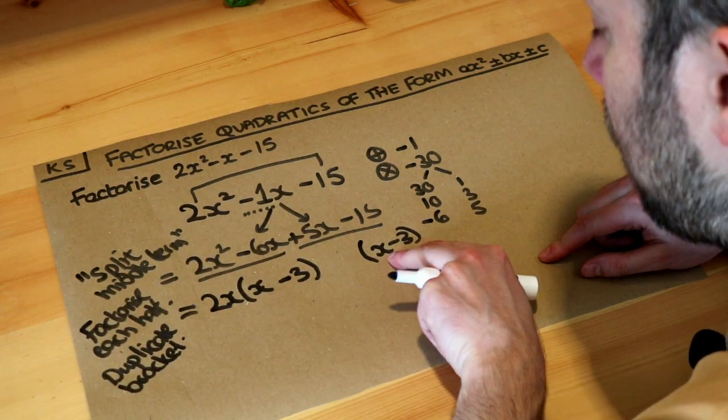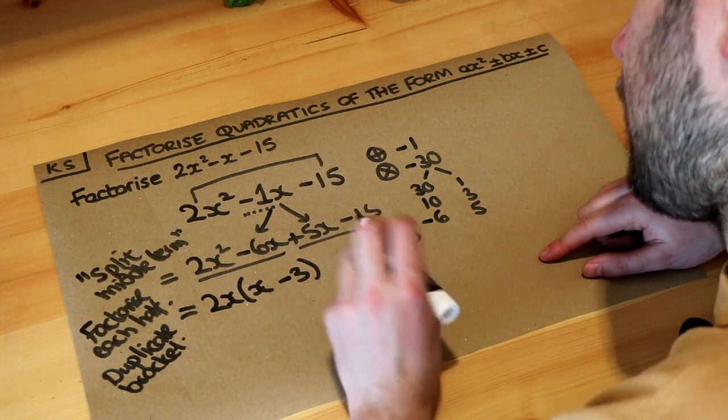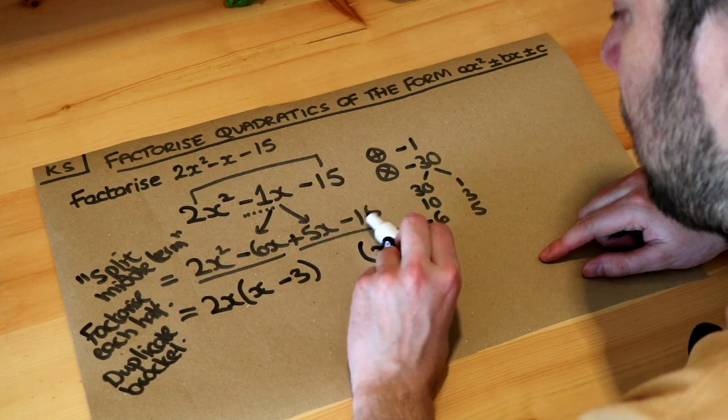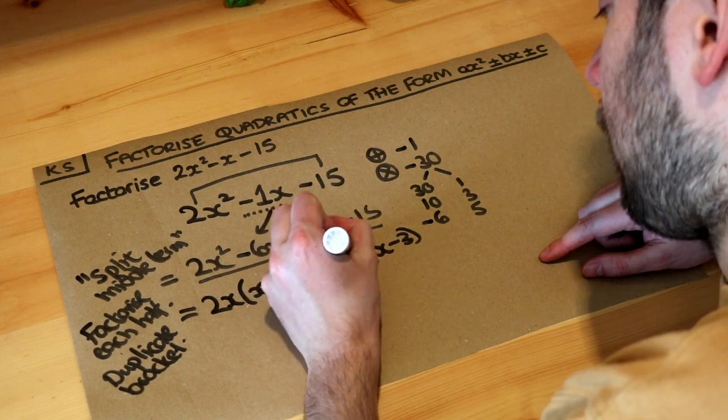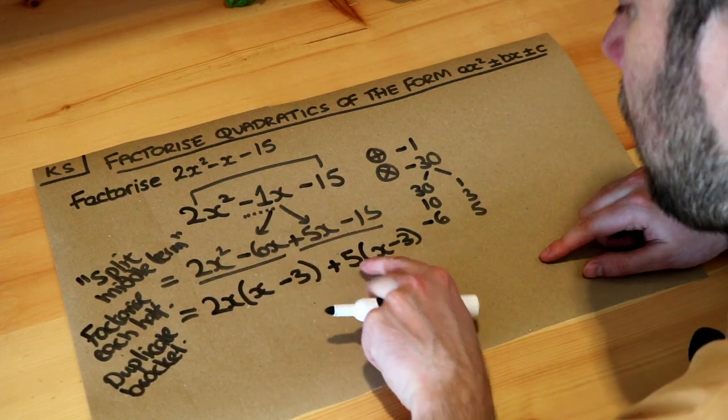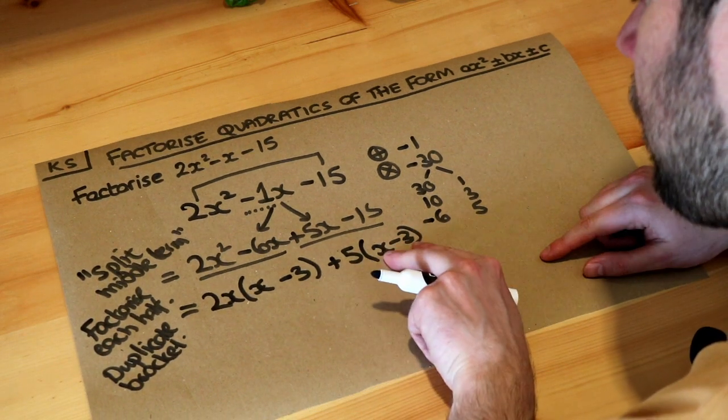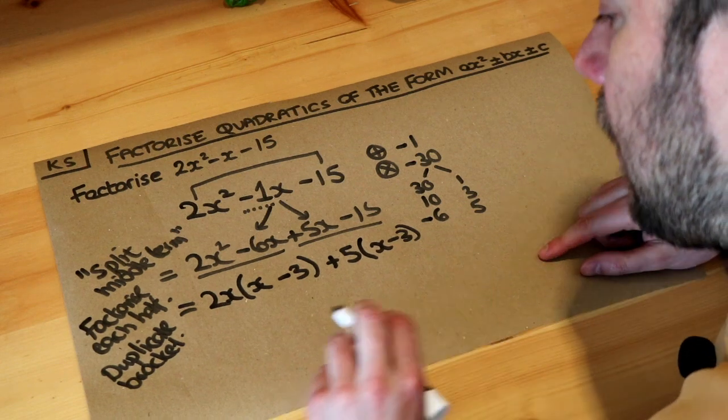Because we should find that when we factorise this, we're going to see that same bracket here as we did here. We then got to think, well, what times x minus 3 gives you 5x minus 15? Well, it's positive 5, isn't it? It's plus 5. Don't forget the plus in front of that 5 there. And you can see that 5 times x minus 3 is 5x minus 15.